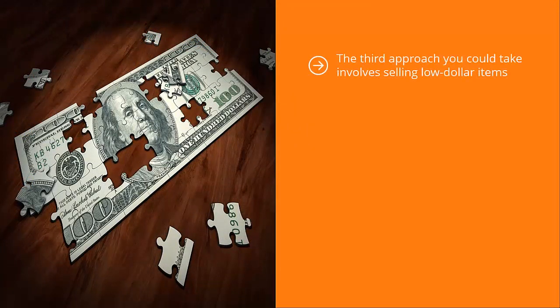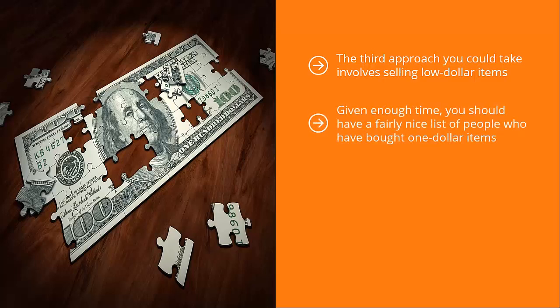The third approach involves selling lower-dollar items. You start with your general list and send one update after another promoting a $1 product. When people buy these $1 items, they end up on your buyer's list. Behind the scenes, they are automatically unsubscribed from your main list. Given enough time, you should have a fairly nice list of people who have bought $1 items. You should then focus most of your time crafting high-converting updates that target your buyer's list. This maximizes your return on effort.